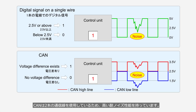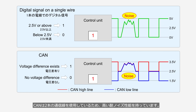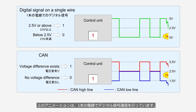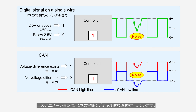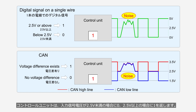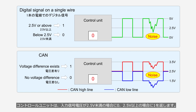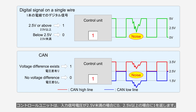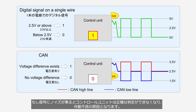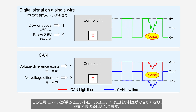CAN uses two communication lines, providing high resistance to noise. For comparison, a single-wire digital signal system returns zero when the input signal voltage is below 2.5 volts, and returns one when it is 2.5 volts or above. If noise interferes with the signal, the control unit will lose accurate judgments, leading to malfunction.